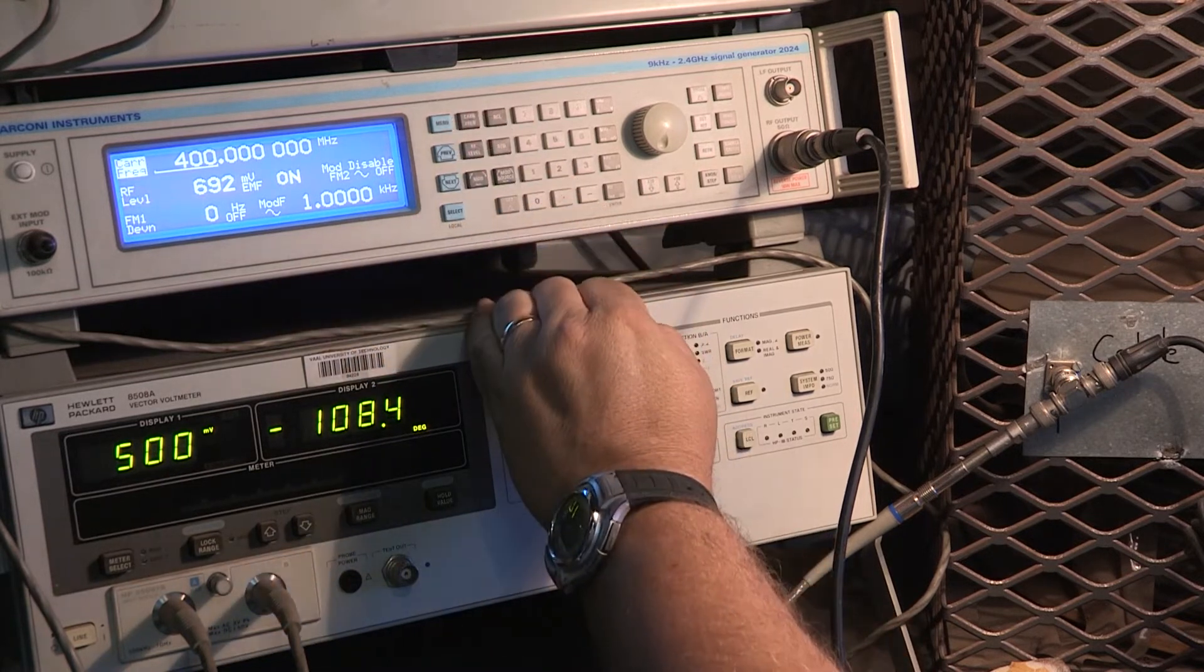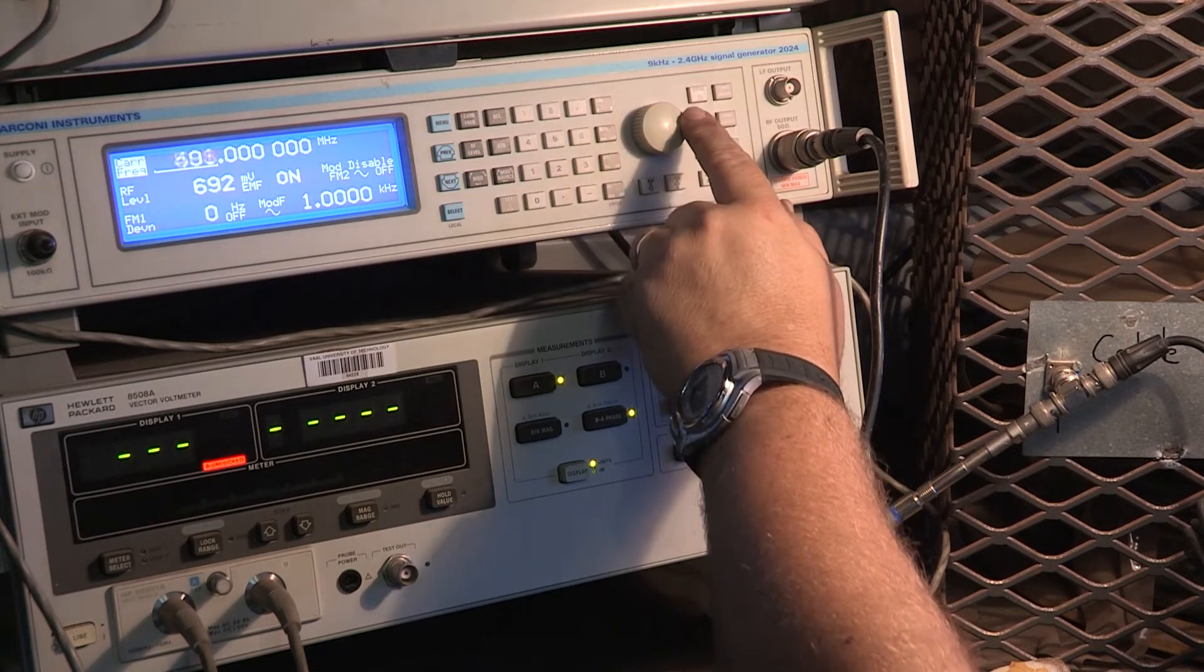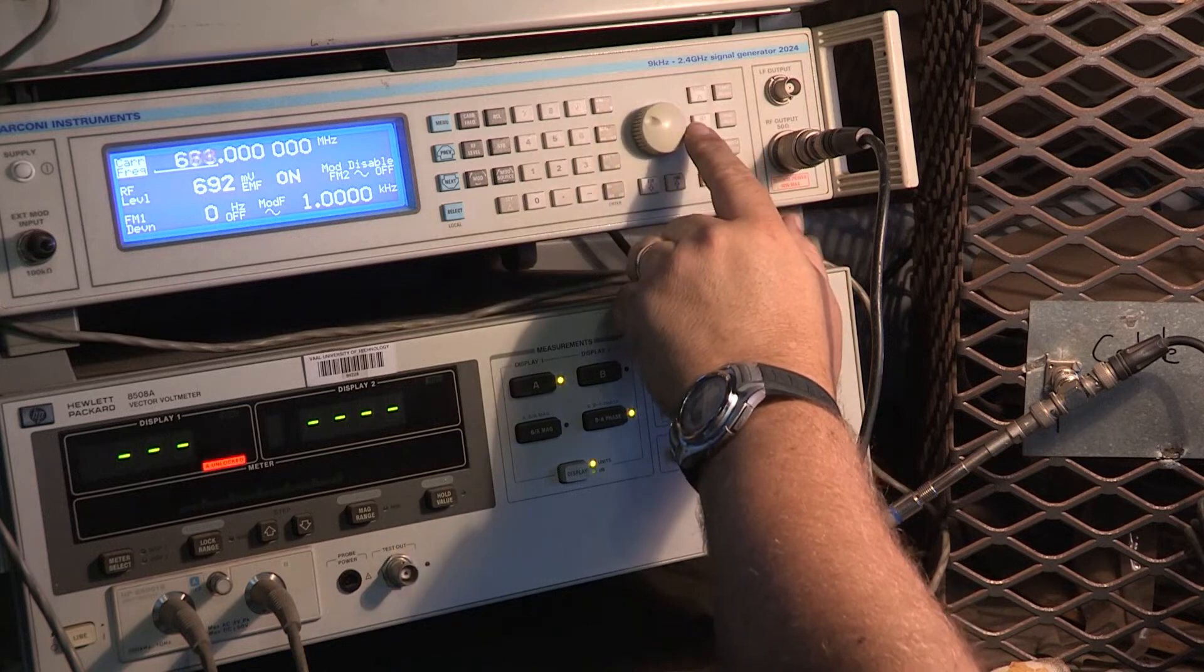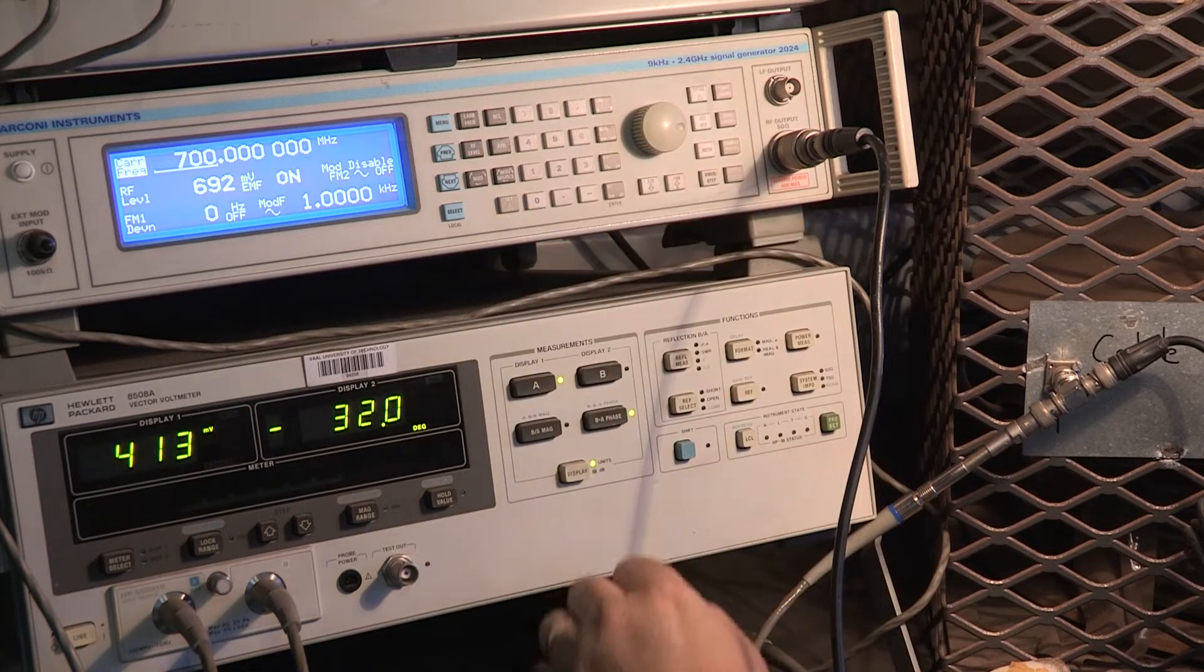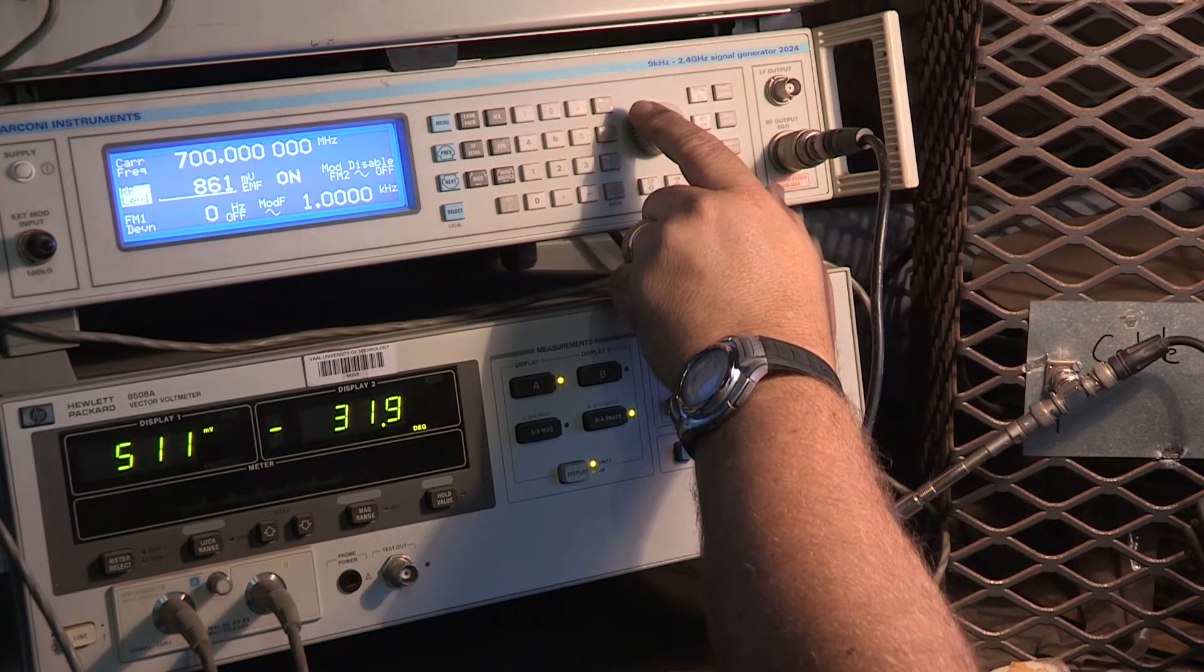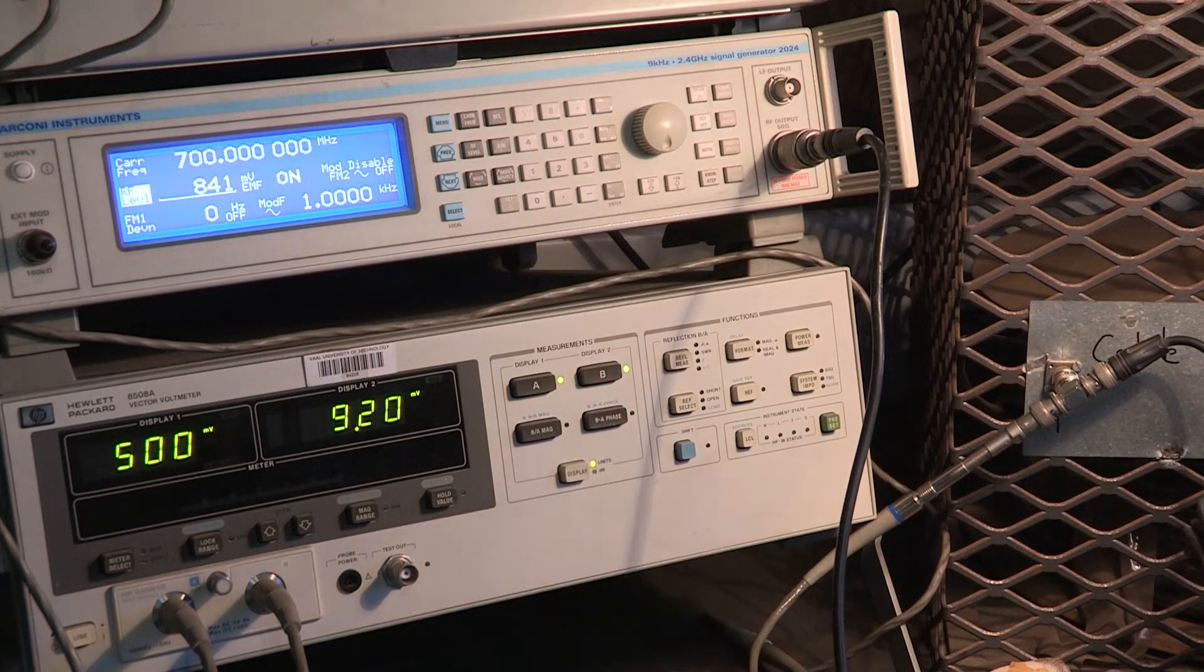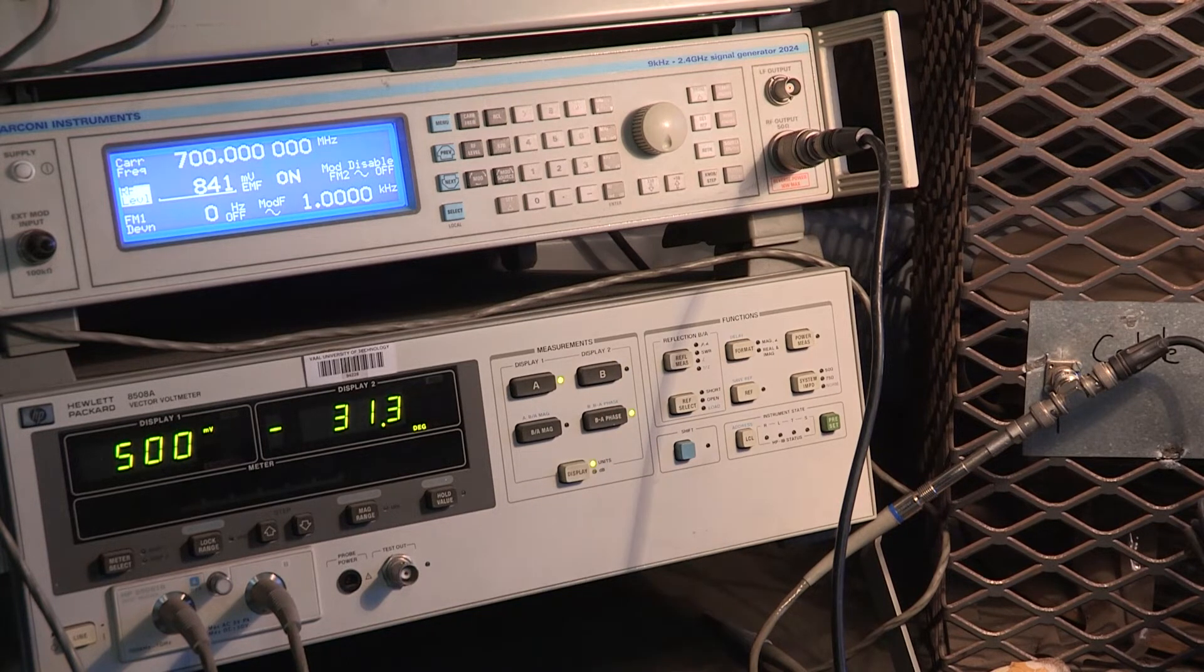Then we go to the next input frequency, 700 megahertz. You see where this cable is going with its readings? I'm quite happy with this range of frequencies because we want to see the effect. Then we notice our input has changed again. So we make sure it goes back to as close as possible to 500. 9.21 millivolts, phase angle of minus 31.4.